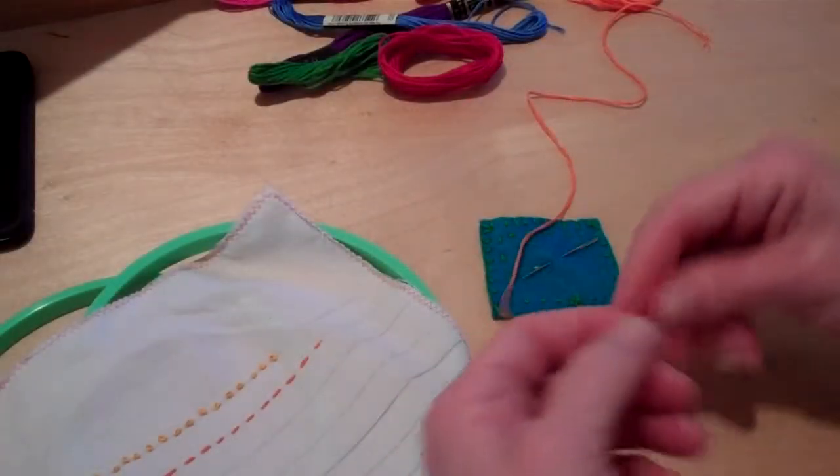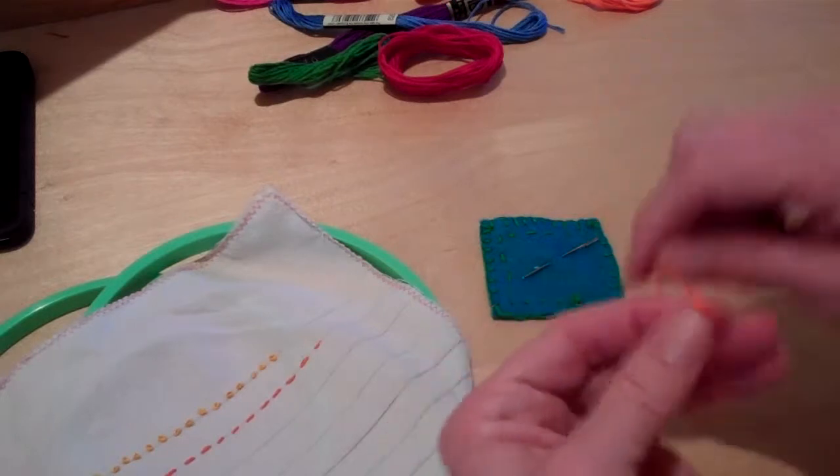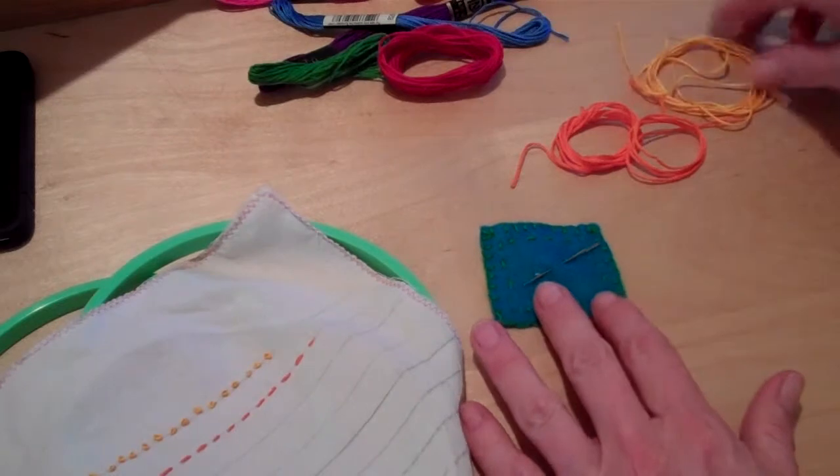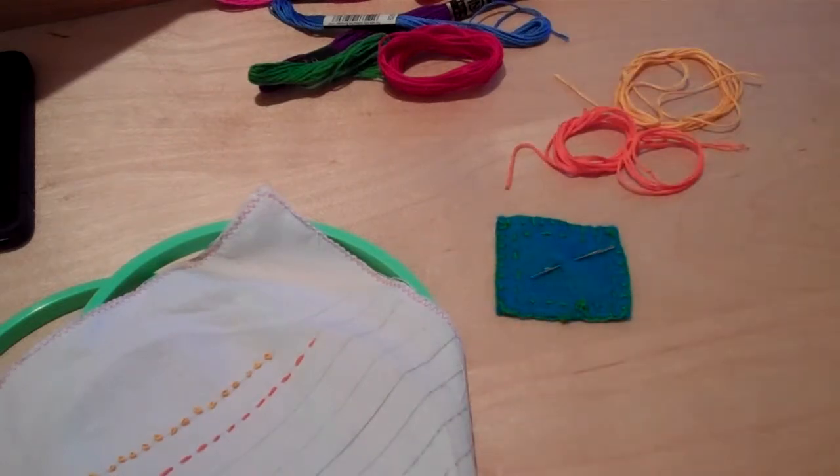If I have extra thread and I've cut my thread too long, I just do a little loop around my finger like that and kind of just keep them like that. And you can keep them in your plastic bag that way too.